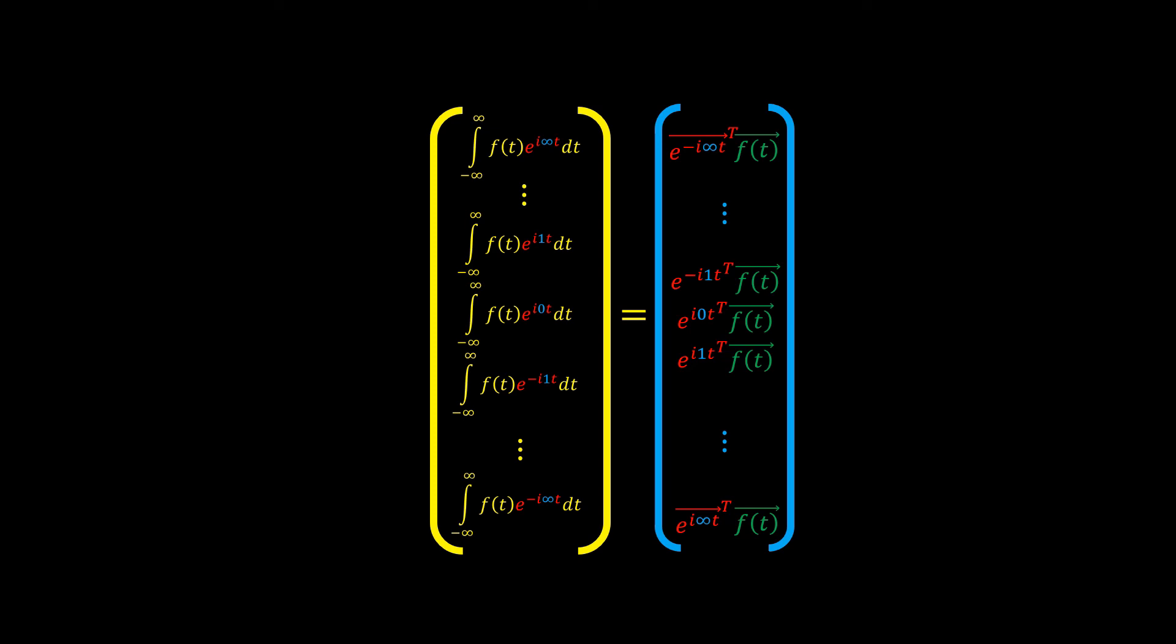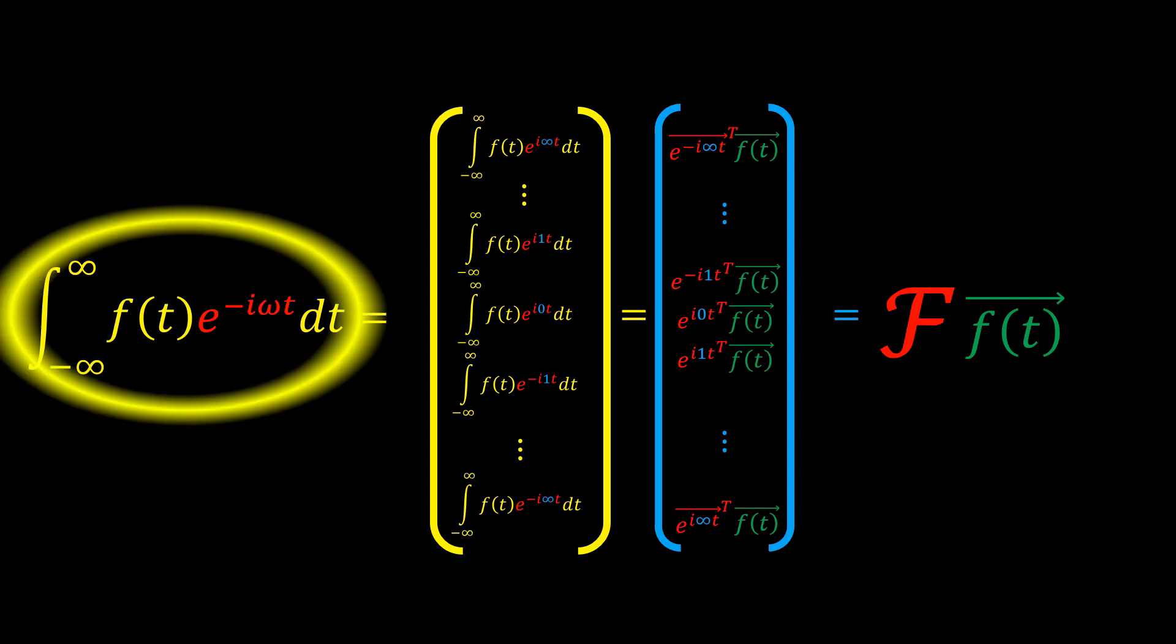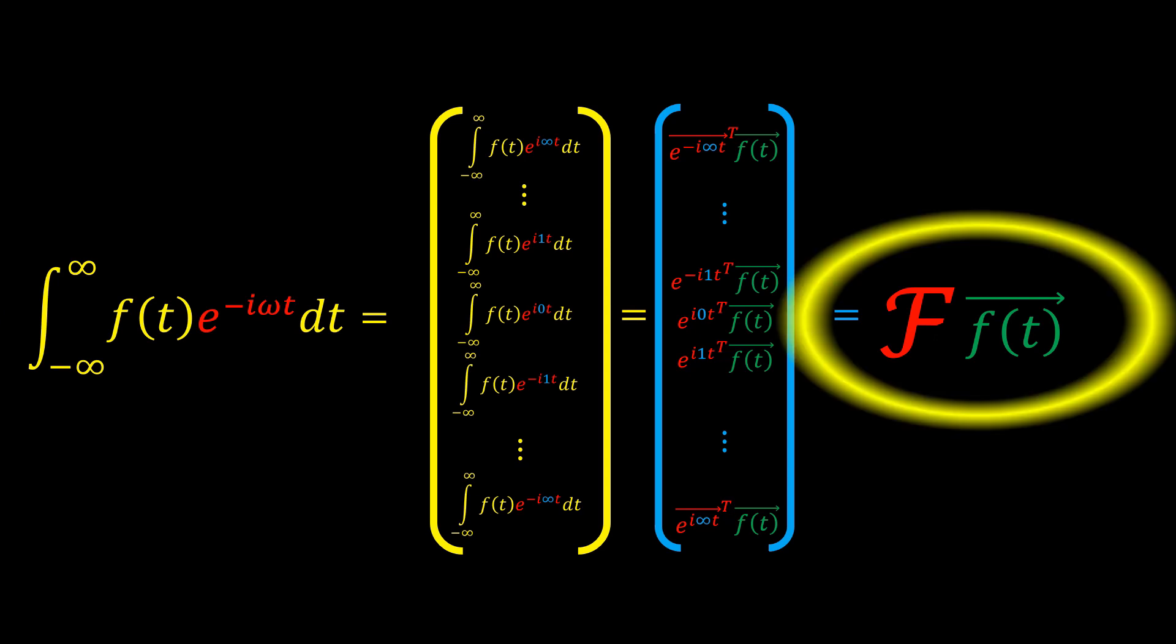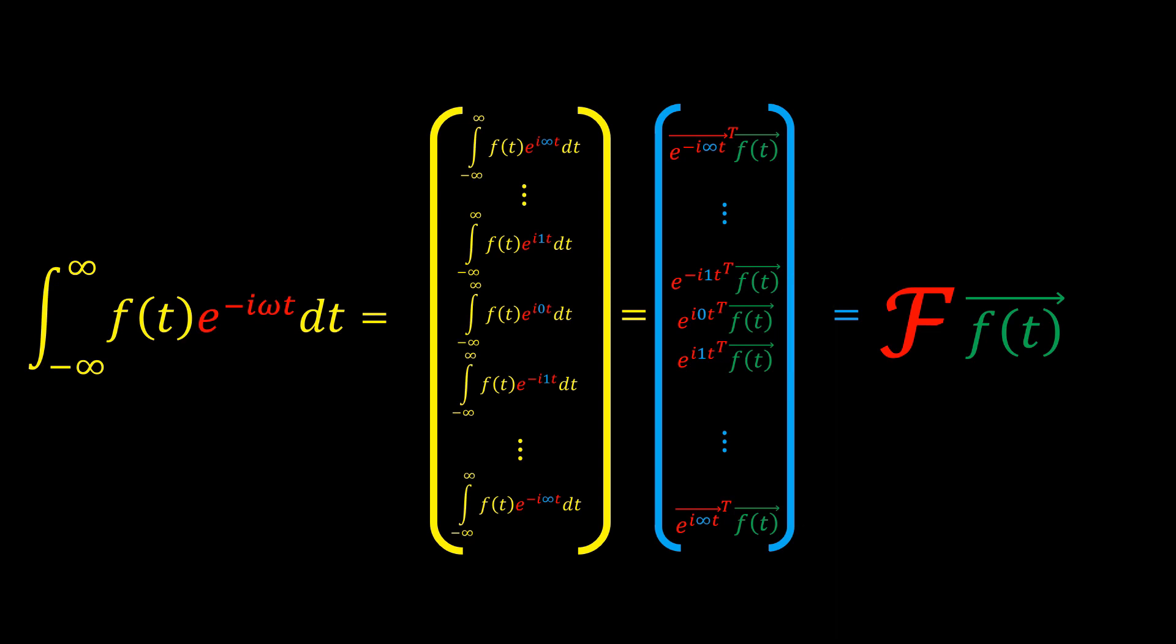Now we can simplify these expressions. If we turn the yellow vector on the left into a more compact form, we get this integral multiplying f by e to the negative iωt. If we simplify the expression on the right, the blue vector, we get a matrix multiplication F times the vector f(t). If we write out the dimensions of this matrix multiplication, we will find that the red matrix F has dimensions ω by t and the green column vector f(t) will have dimensions t by 1. And per the rules of matrix multiplication, we put them together and we get an ω by 1 column vector. And in a sense, the time dimension cancels out.